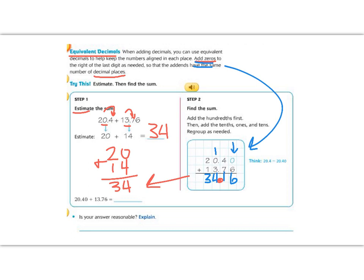So 20.40 plus 13.76 is 34.16. We know that our answer is reasonable because it is close to our estimate.